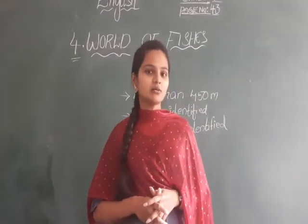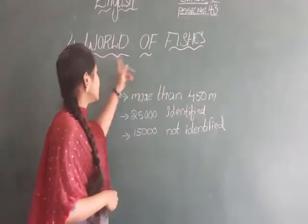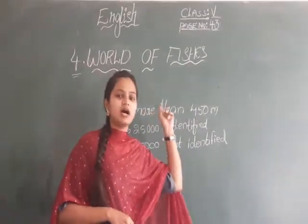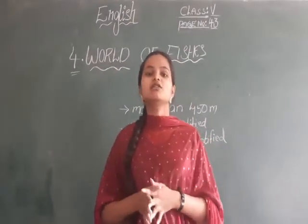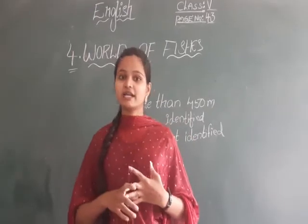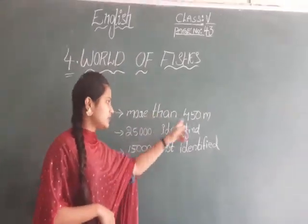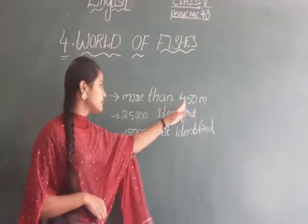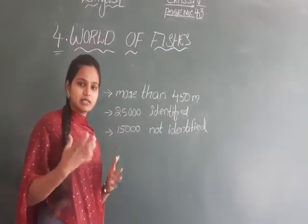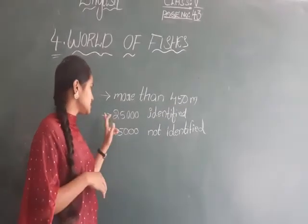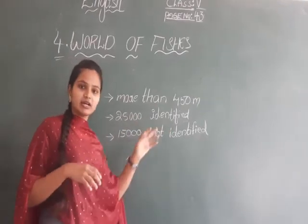So in the previous class we discussed a little bit. What is the lesson there? World of Fishes. So in this lesson we have some parts. How many types of fishes are identified here? More than 450 million years ago fishes existed, and among them 25,000 identified fishes are there.